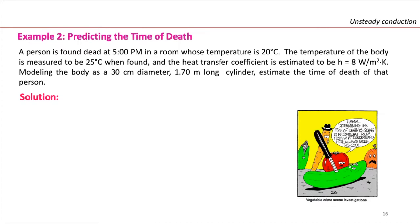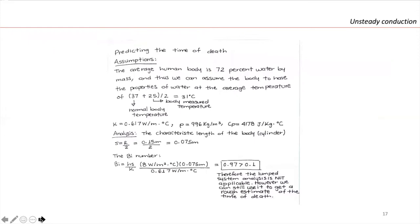We will need extra information to get the Biot number, like the K-value and thermal conductivity. We are going to approximate the body as water, because the average human body is 72% water by mass. So we assume the body has the properties of water at the average temperature of 37°C (normal body temperature) and 25°C (measured temperature), giving 31°C. The K-value is 0.617, density is 996 kg/m³, and CP is 4178 J/kg°C.